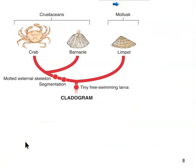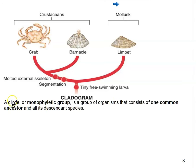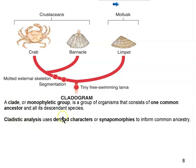Cladistic analysis, or cladistics, is based on the concept of a clade — that's why it's called cladistics. A clade is what we also call a monophyletic group, which means there's only one common ancestor that gave rise to all the species included in that group. Cladistic analysis uses derived characters like segmentation and molted external skeletons, also known as synapomorphies — those are both vocabulary terms, but they're one and the same thing.